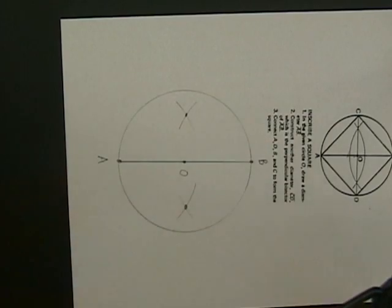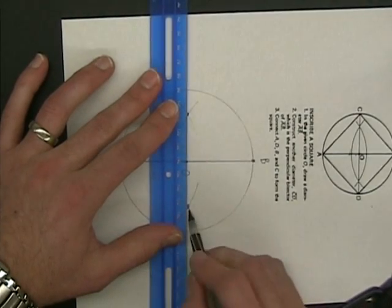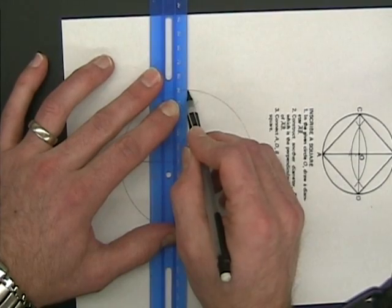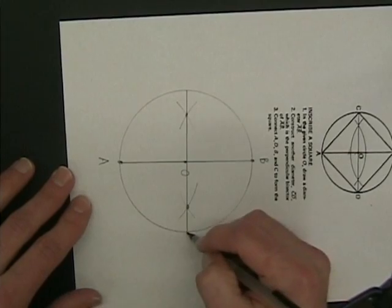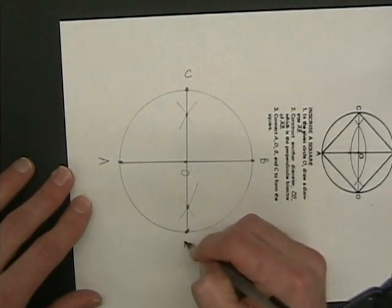This is the construction for the perpendicular bisector. Now when I connect those two points, I'm going to extend past those two points to the points where they intersect the circle. And those points where they intersect the circle, I'm going to label C and D.